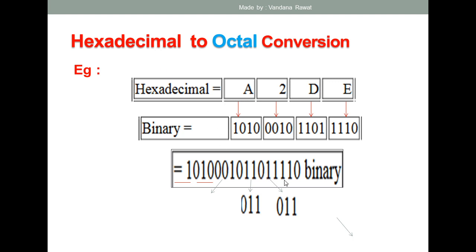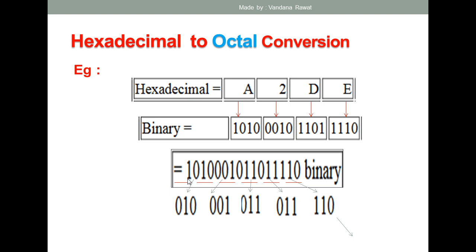The second step is to make groups of these binary numbers in sets of three, starting from the LSB side — that is, the right-hand side. The groups formed are: 110, then 011, then 001, then the next set is 001. After grouping, you check what remains on the MSB side.